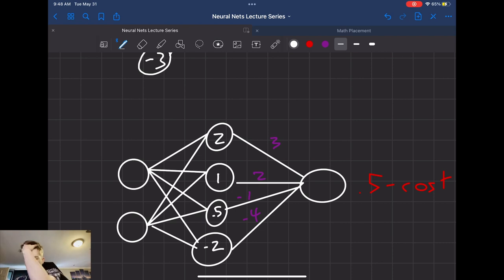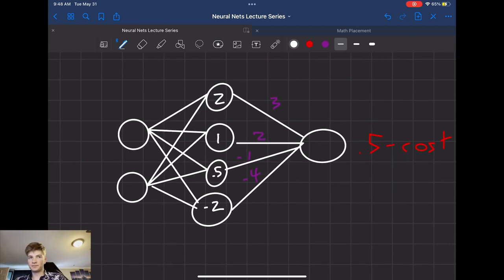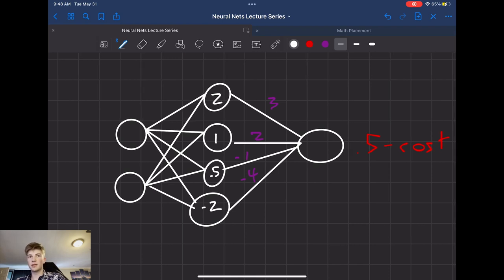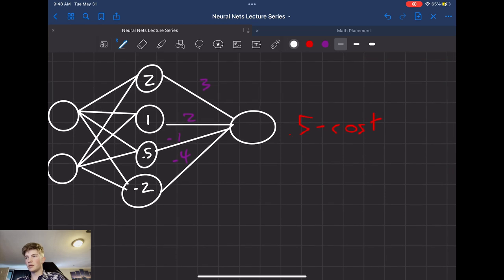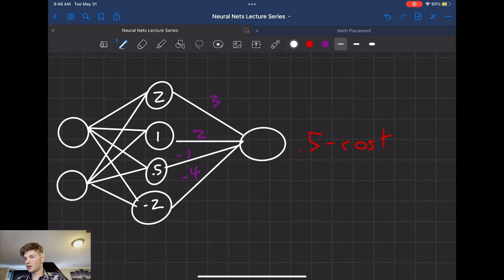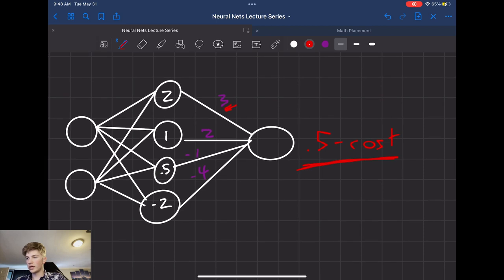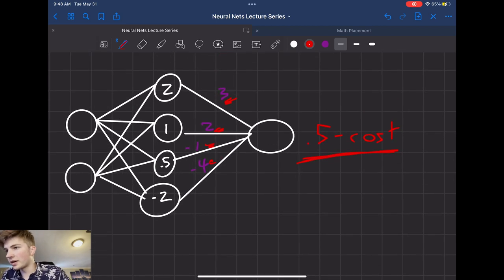And now all we need to do is we just need to get the dot product of this output, this cost, and these weights. Because if we want to see how much we want to affect the first layer and its weights, we need to get the effect of that by doing the dot product of the connections and not getting the dot product of the layer itself.